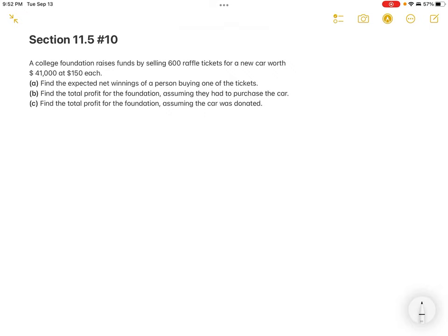Expected value is nothing more than the outcome times its associated probability. So the expected value in any situation is simply the outcome times its associated probability plus the outcome times its associated probability. Theoretically it continues and you could have more, but 99% of the ones I've seen are just two outcome situations like this one.